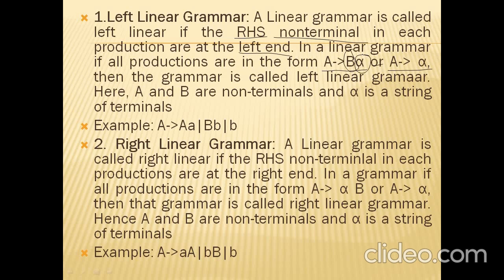In Left Linear Grammar, the non-terminal comes first, followed by a list of terminals. It may also have no non-terminal, since we said at most one. An example of Left Linear Grammar: in the RHS, the first element is a non-terminal. If the production contains any non-terminal, it must be first — then we call it Left Linear Grammar.